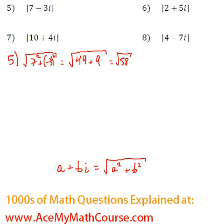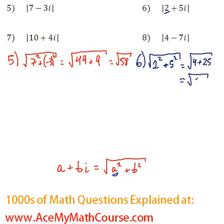How about number 6? Let's pick a different color here. Now our a is 2, so it would have 2 squared plus 5 squared. This would be the square root of 4 plus 25, which is the square root of 29.